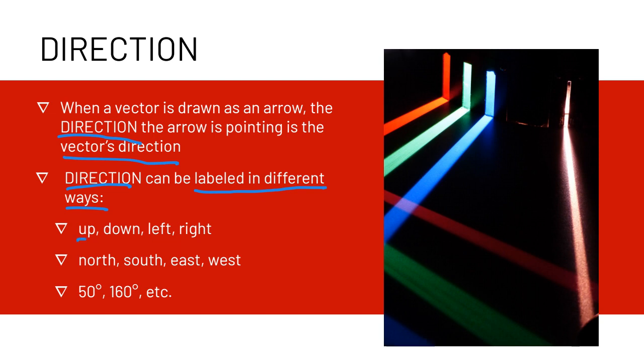We can say the vector is pointing up, down, left, or right. You can say that it's pointing north or south, or east or west, or any variant of that - east south east, west northwest, and so on. Or we can even give it a degree. We could say it's pointing at 50 degrees, or 160 degrees, or any variant of that, 183 degrees.